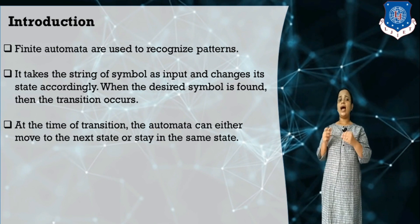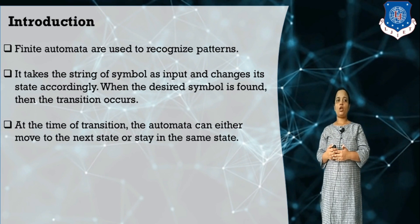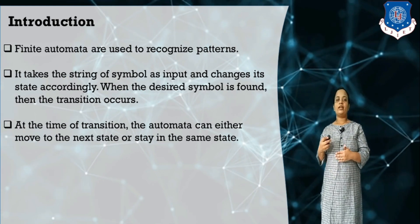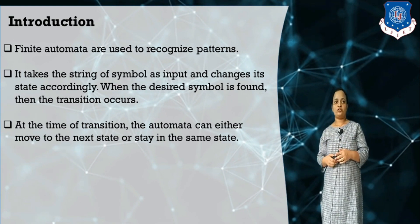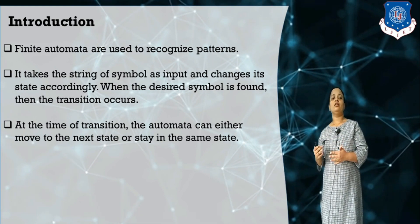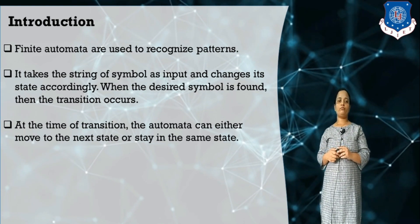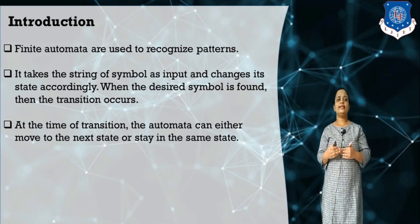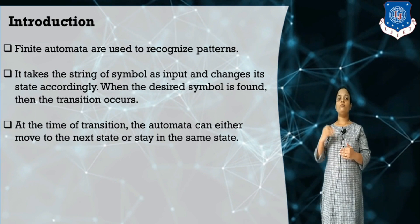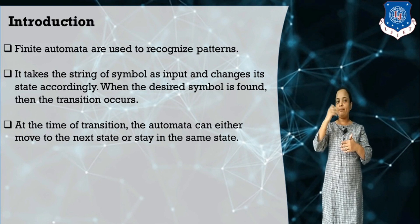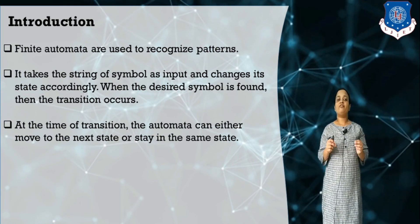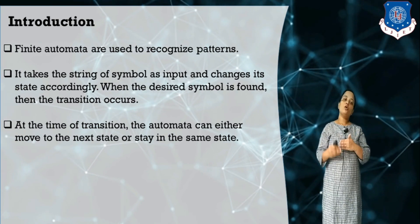If at the end of the string it reaches the accepting state — or we can say if the pattern is found in the given string — then the string is accepted by the language. The transition means that an automata can move from one state to the next state, or it may stay in the same state. So finite automata is used to recognize a pattern.